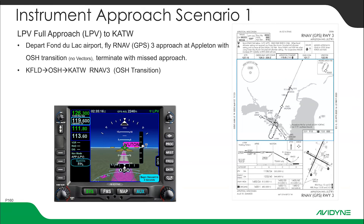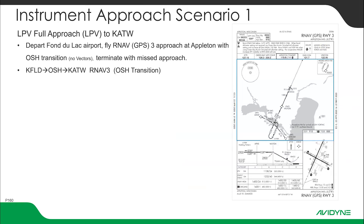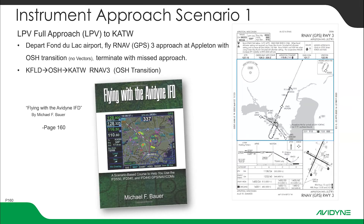In this first scenario we're going to shoot an LPV approach into Appleton, Wisconsin — the RNAV3 approach. We'll fly out of Fond du Lac using the OSH transition to Appleton. Here's the approach plate. If you're following along at home, we're using the book 'Flying with the Avidyne IFD' by Michael F. Bauer.